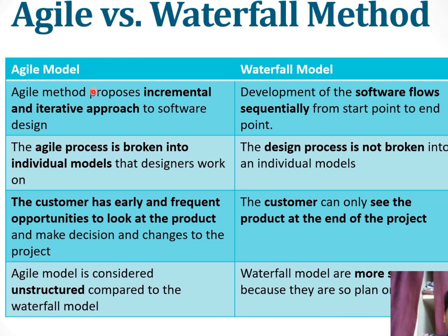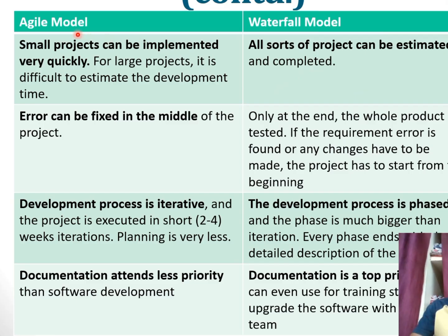Comparing agile with the waterfall method: agile is an iterative-based approach while waterfall is a sequential-based approach. In agile, the project can be broken into small modules that the designer can work on; in waterfall, the project cannot be broken and must proceed phase by phase. In agile, the customer has the opportunity to get early outputs, but in waterfall, output is only available at the end of the project. Agile is considered unstructured compared to the waterfall model.